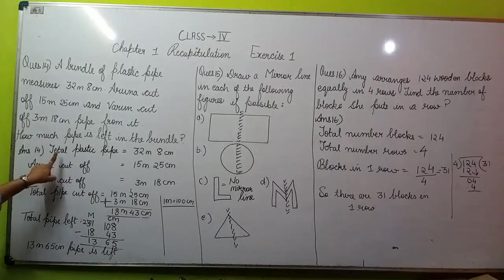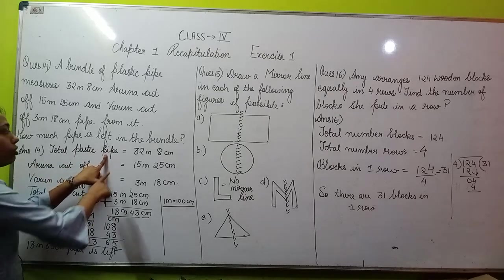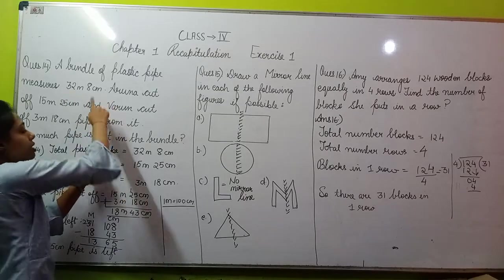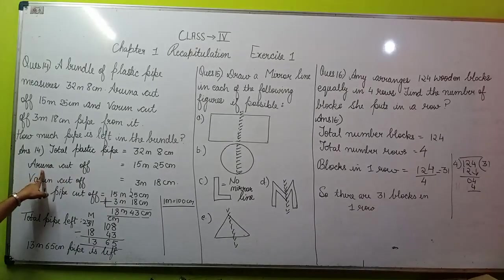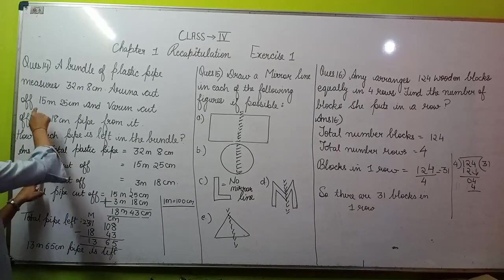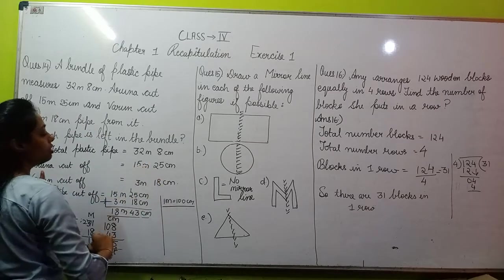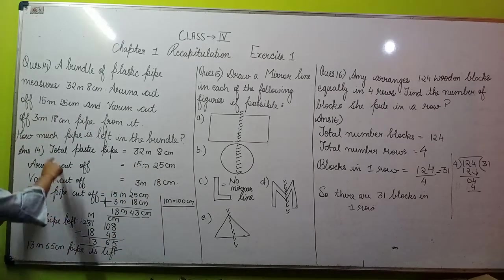So let's write the answer. We are talking about total plastic pipe. The total plastic pipe is 32 meters 8 centimeters. Then Aruna cut off - Aruna cut 15 meters 25 centimeters.